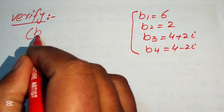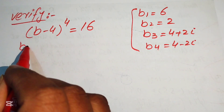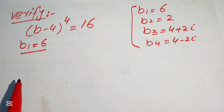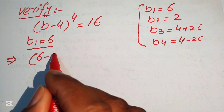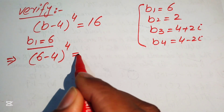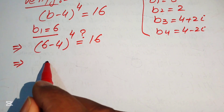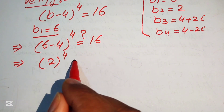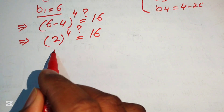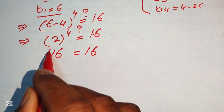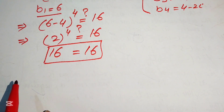The original equation is (b minus 4) to the power 4 equals 16. For b1 equals 6: substituting gives (6 minus 4) to the power 4, which is 2 to the power 4. We check: 2 to the power 4 equals 16, and 16 equals 16. The first root satisfies the equation.